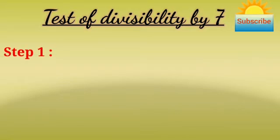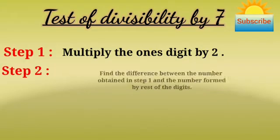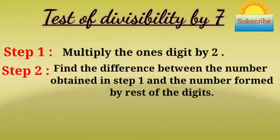Step 1: Multiply the ones digit by 2. Step 2: Find the difference between the number obtained in step 1 and the number formed by rest of the digits.